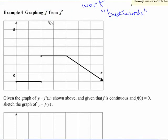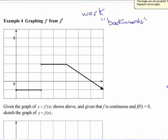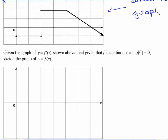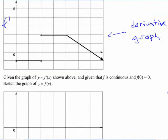This is working backwards here. This is the graph of the derivative, right? This is f prime. This is the derivative graph. We're going to try and draw the original function here. This line is horizontal here.